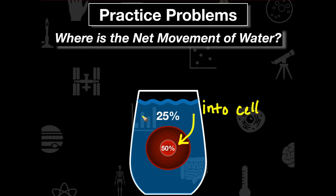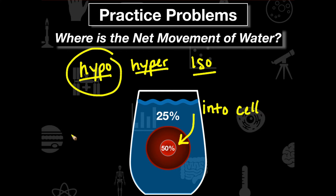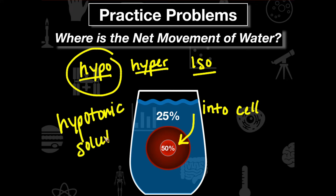The next question asks: what type of solution is the cell in — is it hypotonic, hypertonic, or isotonic? Relative to the cell, the water in the glass has less solute than the cell. So it is going to be a hypotonic solution. The water relative to the cell is hypotonic.